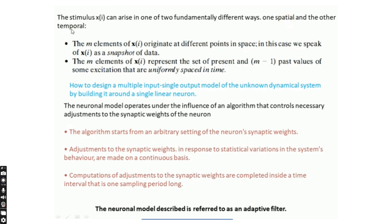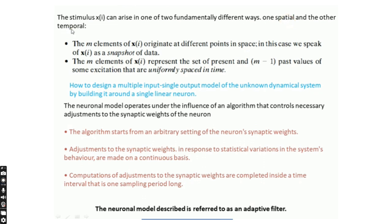The synaptic weight adjustment is made on every neuron on a continuous basis. Third, the computation of adjustment of synaptic weights — the mathematical computation on synaptic weights and the necessary adjustment based on that calculation — must be completed within the time interval of one sampling period. These three fundamental characteristics define the algorithm. The neural model described by these conditions is referred to as an adaptive filter.